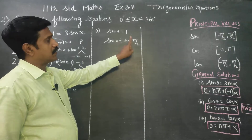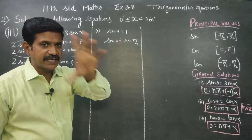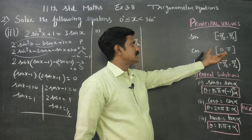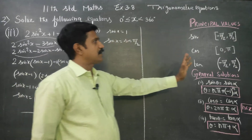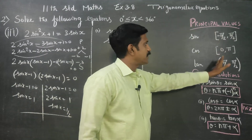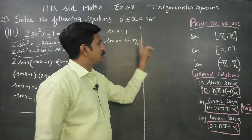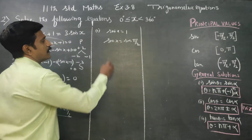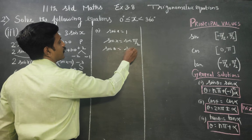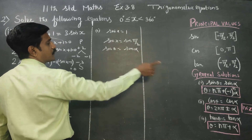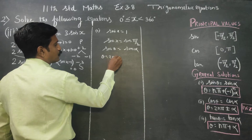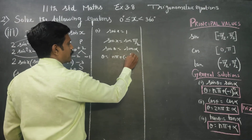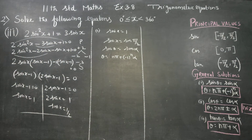Alpha must always be the principal value. For sinθ = sinα, alpha must be in the principal value range. The general solution formula is: θ = nπ + (-1)ⁿ × α. So for sinx = 1, where α = π/2, the general solution is θ = nπ + (-1)ⁿ × (π/2).